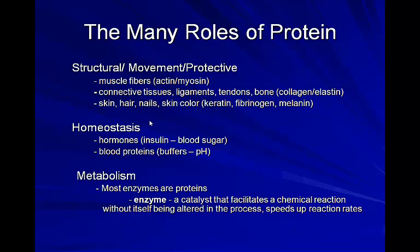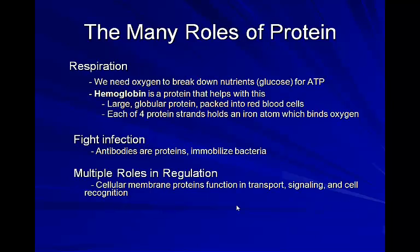Hormones can either be lipid-based — like testosterone and estrogen — or protein-based like insulin. Carbohydrates don't make up any of our hormones. Proteins also play a major role in metabolism — just about every enzyme in our body is a protein. Enzymes are catalysts that speed up the rate of chemical reactions without being altered themselves, making them the ultimate recycler. They help break down food and speed up different metabolic pathways.